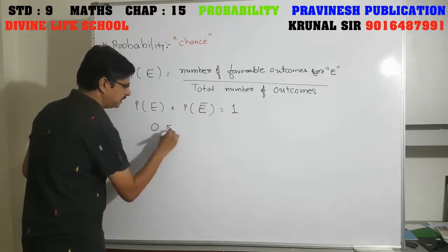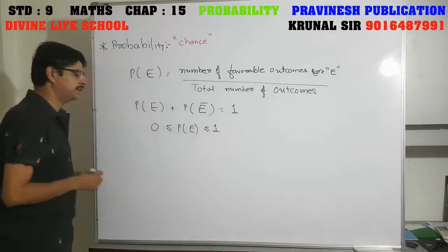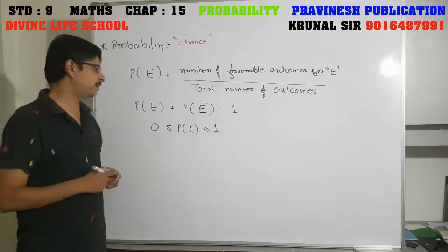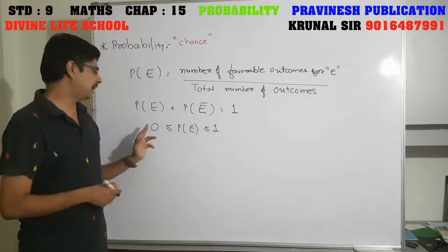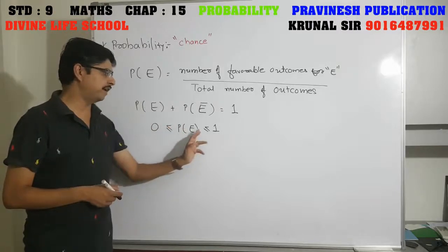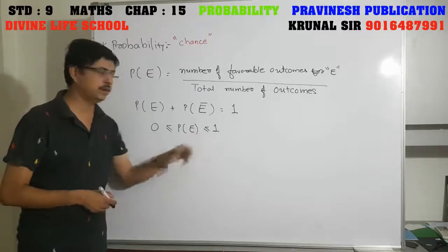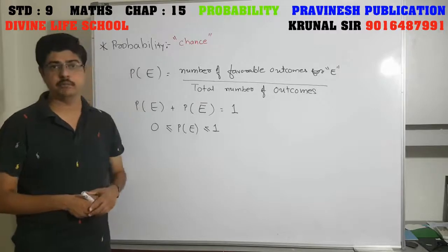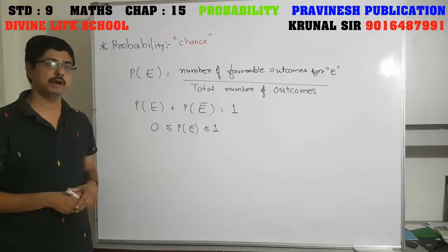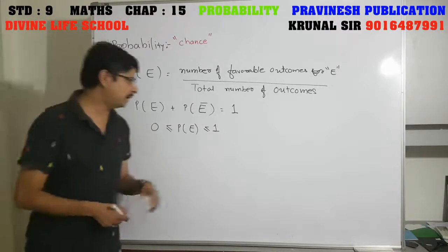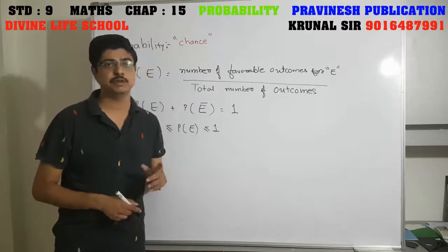Next: 0 less than or equal to probability of an event less than or equal to 1. This is the range of probability — probability will always lie between 0 and 1, including 0 and 1. The probability of any event can be 0 or 1 or any number in between. The minimum probability of any event is 0 and the maximum probability of any event is 1.